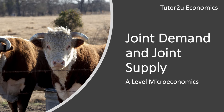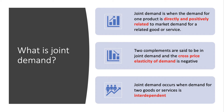First of all, what is joint demand? Joint demand is when the demand for one product — could be a good or a service — is directly and positively linked to the market demand for a related good or service. The best example of this would be two complementary products.